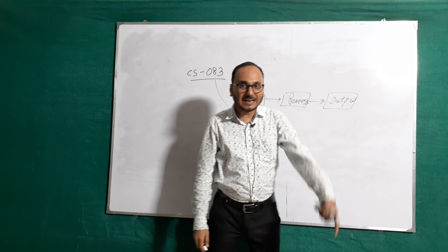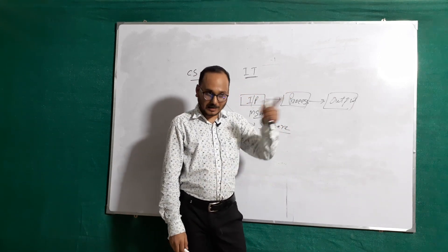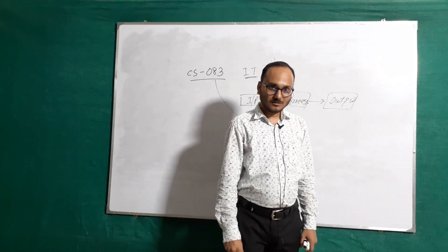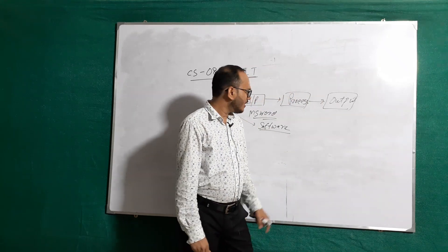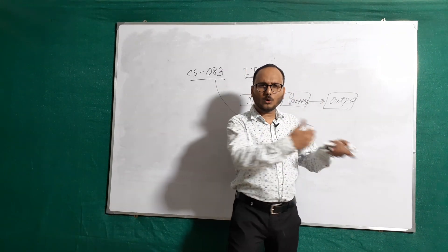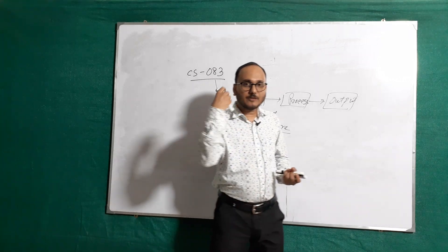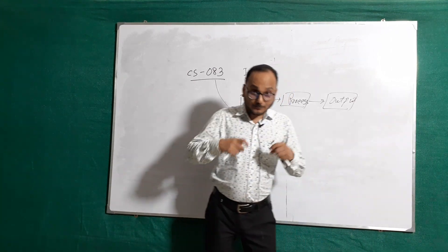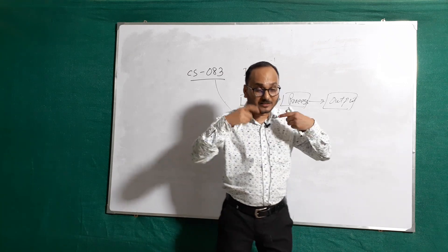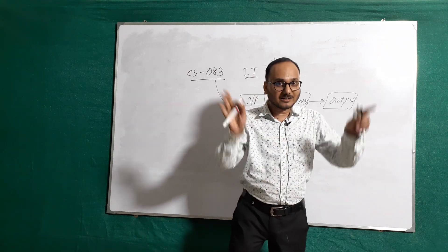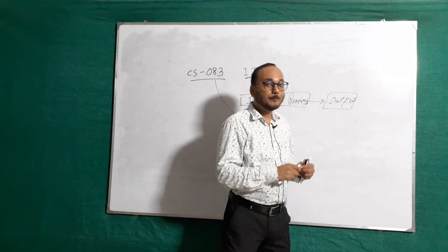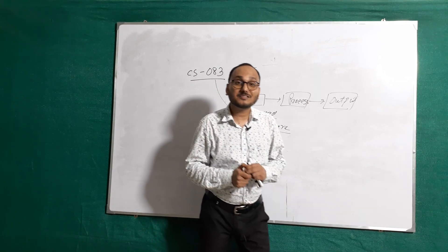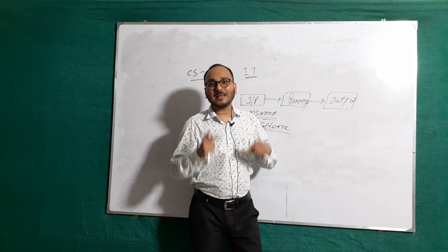High level language is what we humans can understand. Middle level is in between high and low level. Low level is what only the computer can understand. So there is a question: how can we convert high level to low level and low level to high level? When we write in a high level or English-like language, the computer needs to understand it — so we need a compiler and interpreter, also called a language translator.